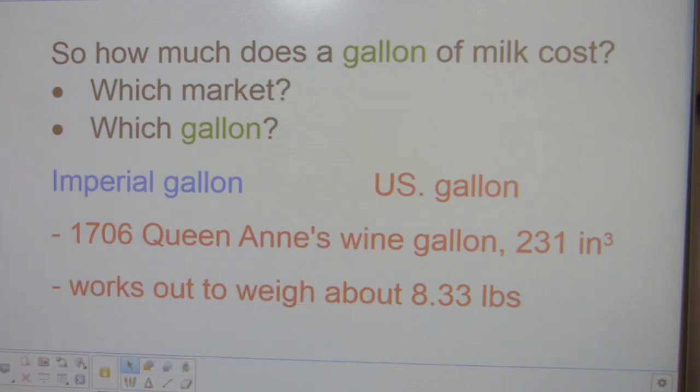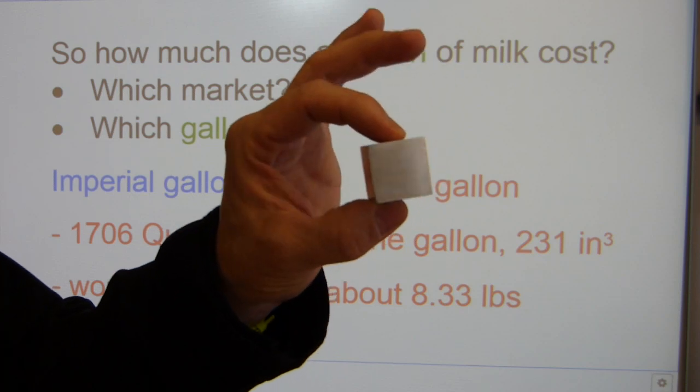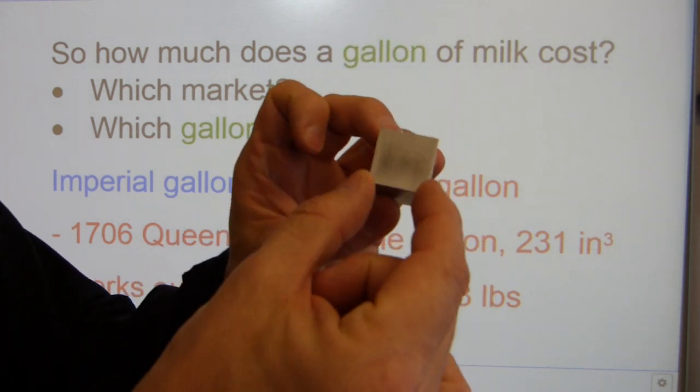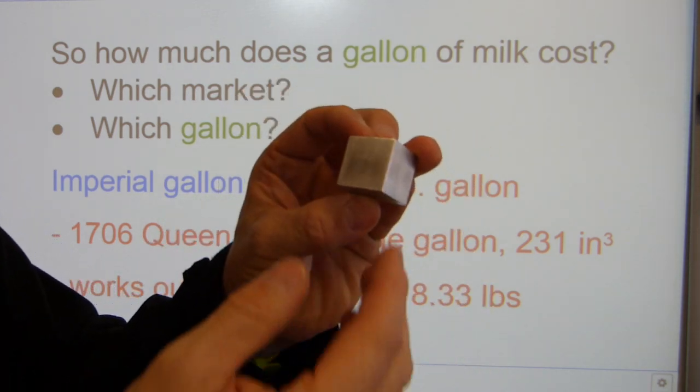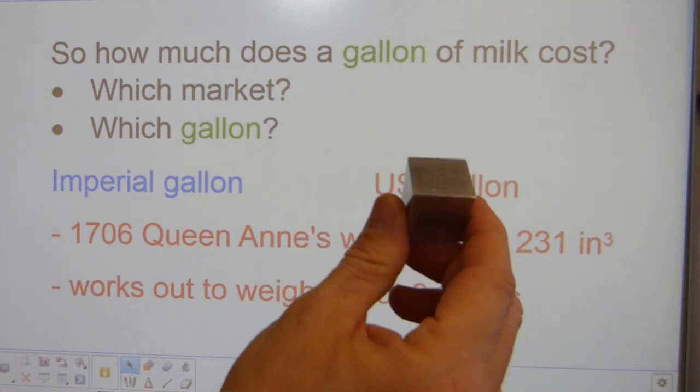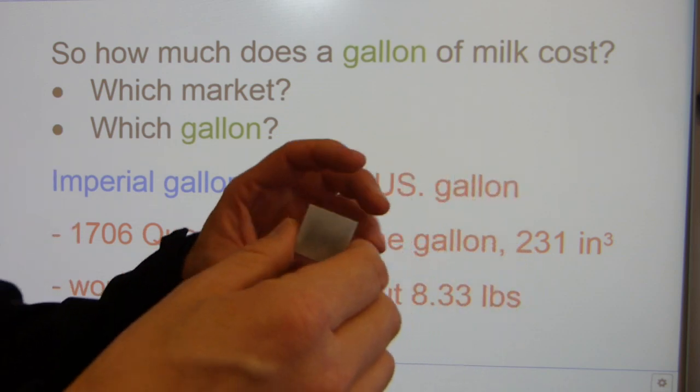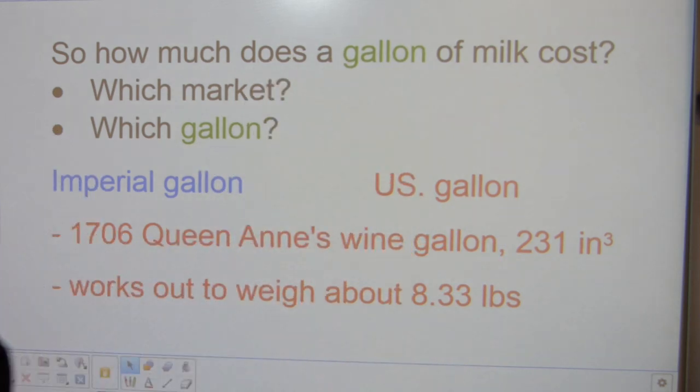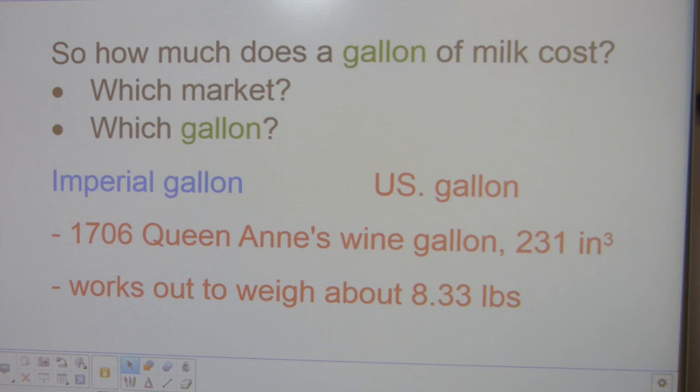231 cubic inches is its volume. In my hand here is a cubic inch, a chunk of aluminum. It has a length of one inch, a height of one inch, and width of one inch. It's one inch of space. 231 of these little guys make one US gallon because the volume is fixed to this many cubic inches.